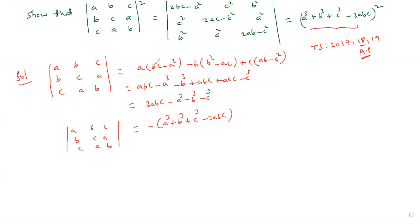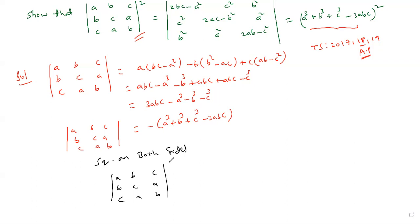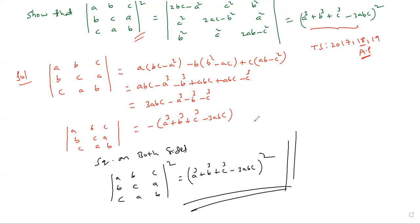Now the given question is to prove the whole square. Simply square both sides — squaring on both sides, you automatically get: det[a,b,c; b,c,a; c,a,b] whole square equals (a cubed plus b cubed plus c cubed minus 3abc) whole square. Part one of the solution is completed.